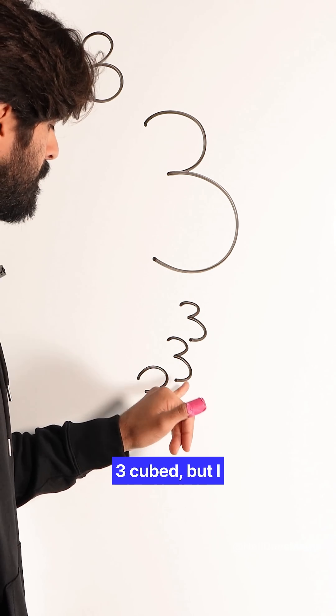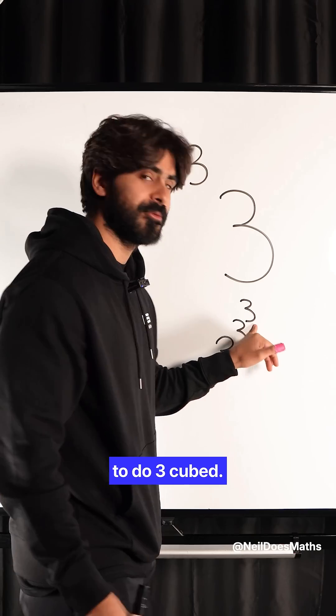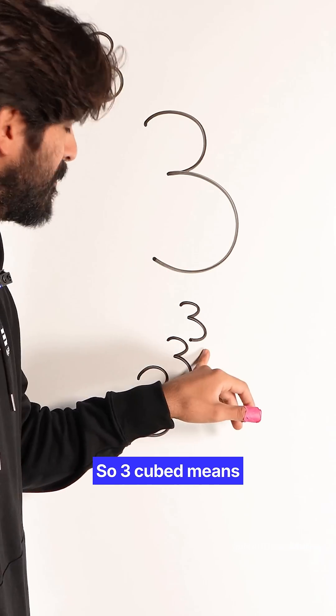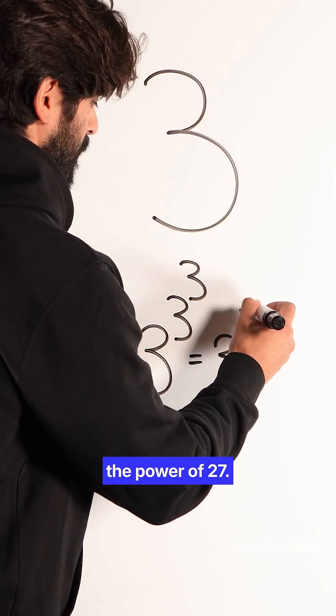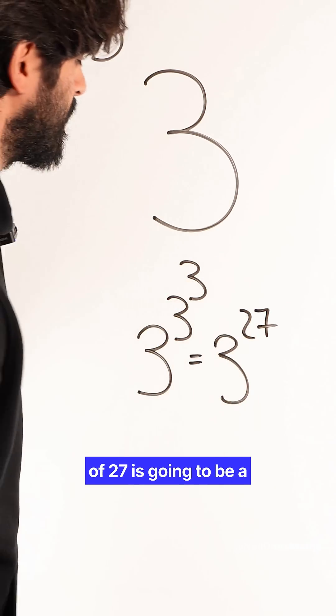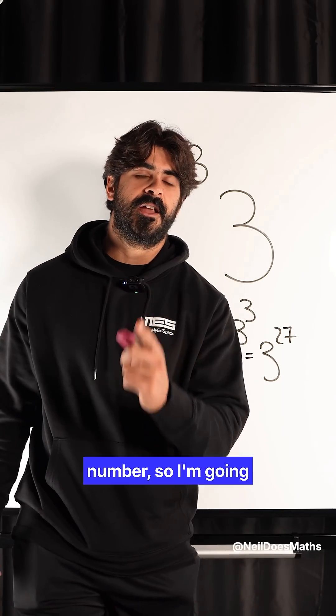So we need to do three cubed, but I can't do that because I need to do three cubed first. Three cubed means three times three times three, which gives us 3 to the power of 27. Now 3 to the power of 27 is going to be a massive number.